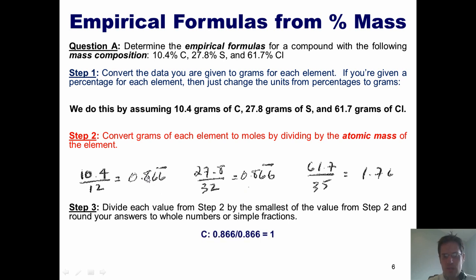So what I'm going to do is for carbon, take 0.866, divide it by itself, and we get one. For sulfur, I get the same. And for chlorine, 1.76 divided by 0.866, I get two.